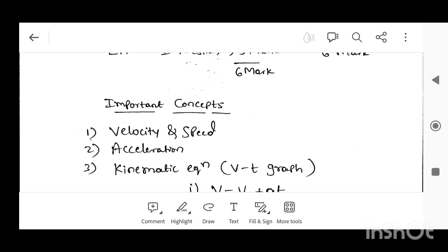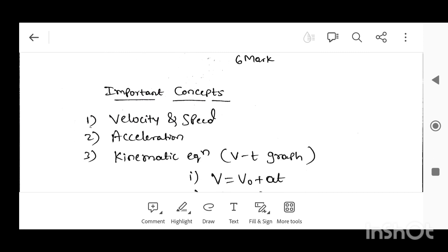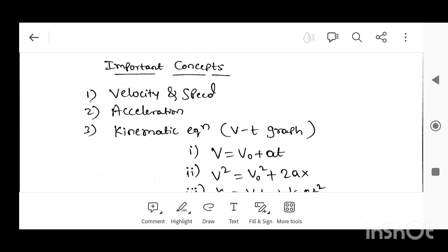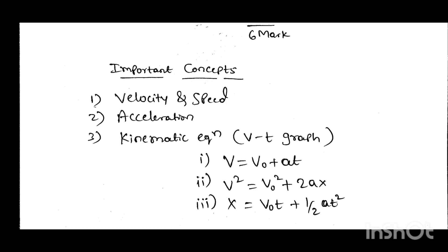If you prepare this chapter well, you can easily get six marks in the annual exam 2024. The important concepts on which you are going to get questions: first is velocity and speed — these are basic concepts. You may also get questions on distance and displacement, which are one-mark MCQ type questions. After that, kinematic equations — specifically related to the VT graph, that is the velocity-time graph graphical method — are important.